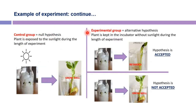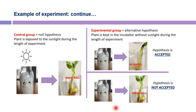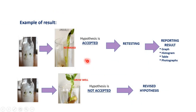The control group exposes seeds to sunlight so that the plant grows well. Both experimental groups are kept in an incubator without sunlight. The first experimental group shows that plant growth is affected, so the hypothesis is accepted. However, the second experimental group shows that the plant grew well, so the hypothesis is not accepted. If the hypothesis is accepted, retest and report results in graphs, tables, and photographs. If not accepted, revise the hypothesis and run the experiment again.